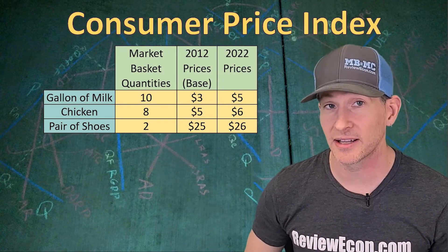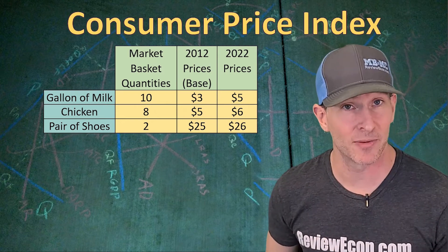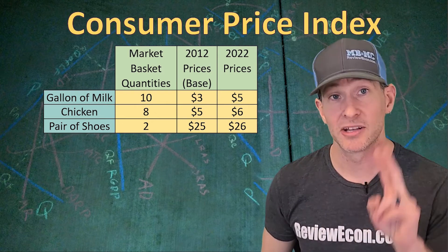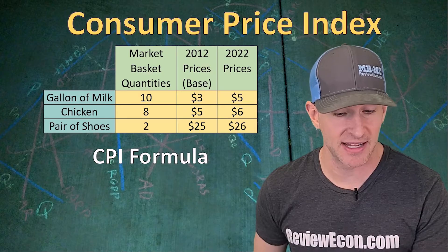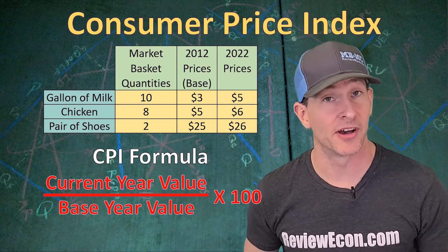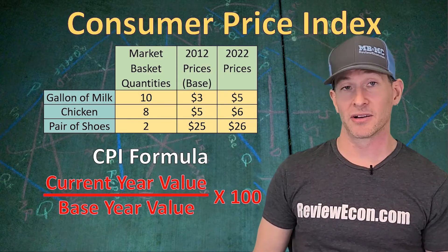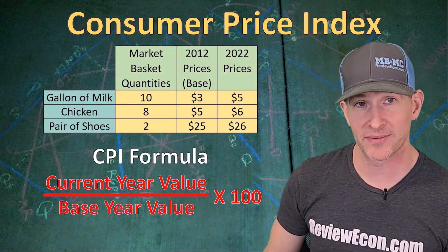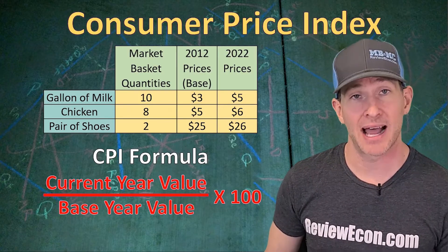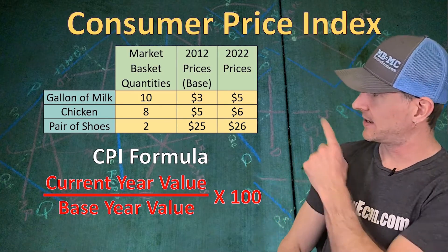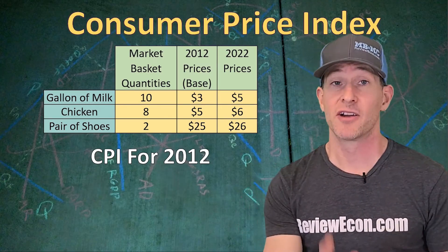When it comes to calculating the CPI, we're going to calculate the value of that entire market basket twice. The formula for the Consumer Price Index is: the value of the market basket in the current year divided by the value of the market basket in the base year, times 100. So we're going to look at all of those prices and quantities.